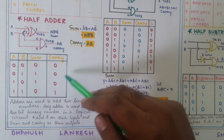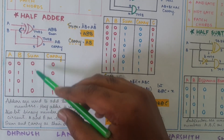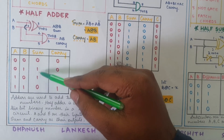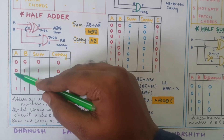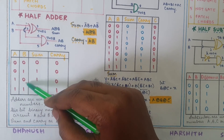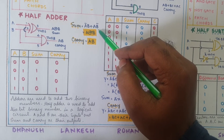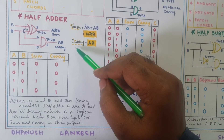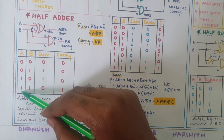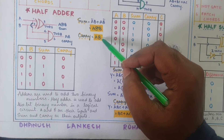After writing the truth table I will derive the equations for sum and carry. Observing where the ones appear in sum: the first one corresponds to A-bar B, and the second to A B-bar. So the sum equation is: Sum = A-bar·B + A·B-bar, which is A XOR B. For carry, the one is present at A·B, so Carry = A·B.